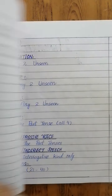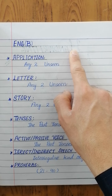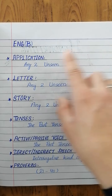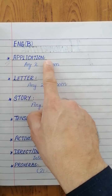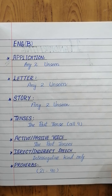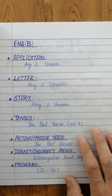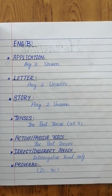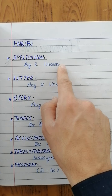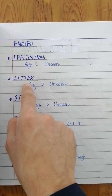Turn over the page. This is English B — that was English A and this is English B. Write English B here. Leave a line and make a heading of Application — all letters must be capital. Any to unseen means you can be given any topic to write an application on. The teacher will tell you the format or pattern of how to write an application, and you will write on any topic. Then leave a line and make a heading of Letter — any to unseen.